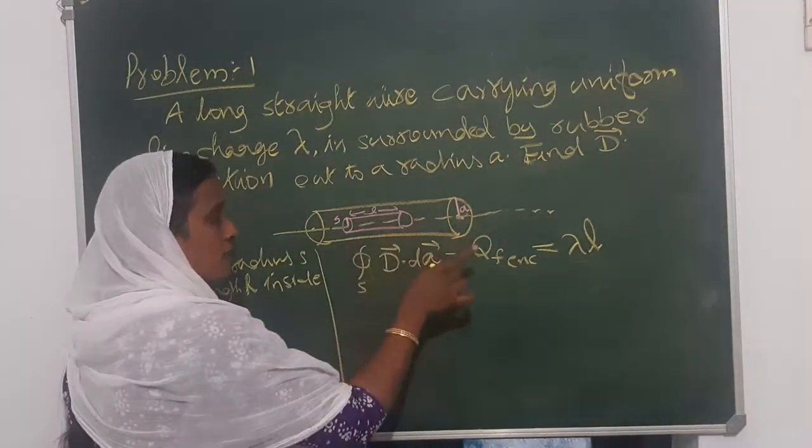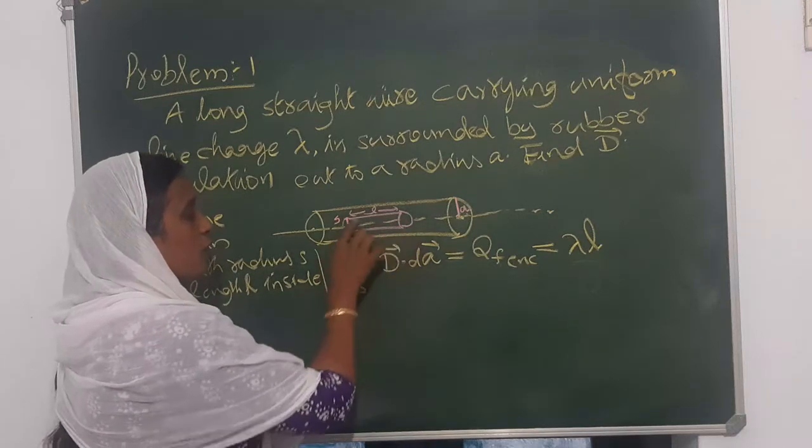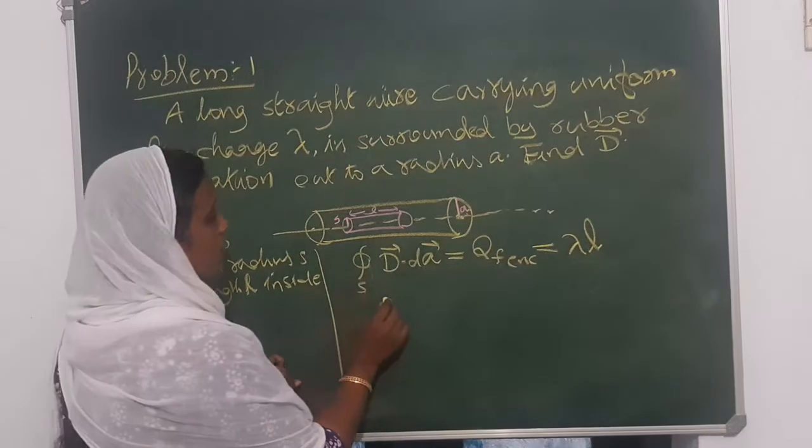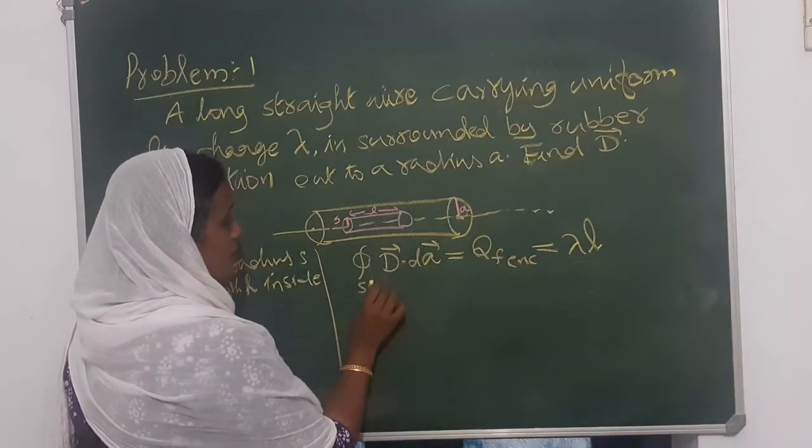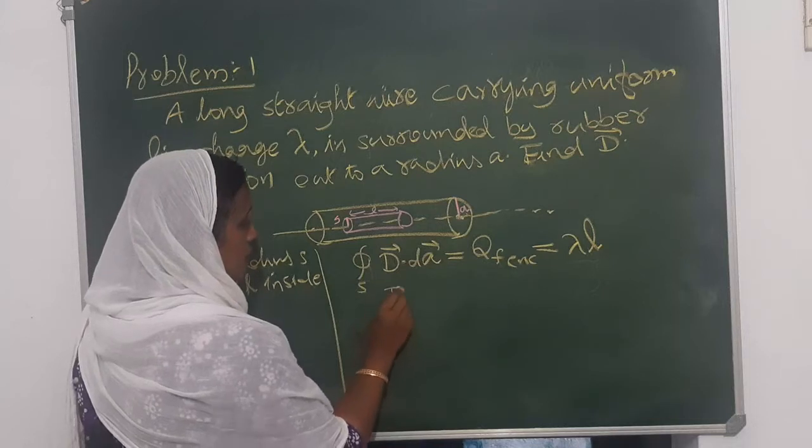This integration - Gaussian cylinder, not sphere - this integration is over the Gaussian surface. So here you can write this as: